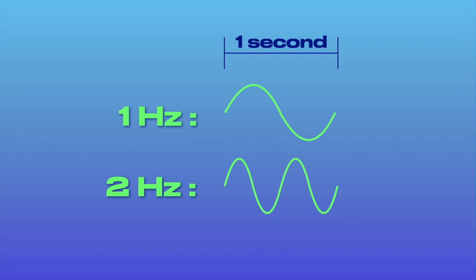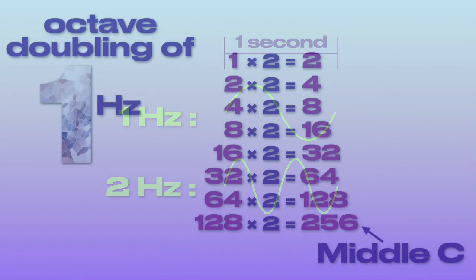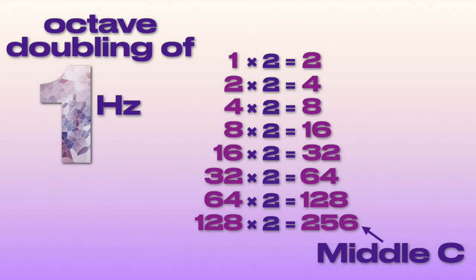Both of these harmonic frequencies express the note of C, which can scale up from 1 Hz to 256 Hz, or middle C, by doubling through its octaves.